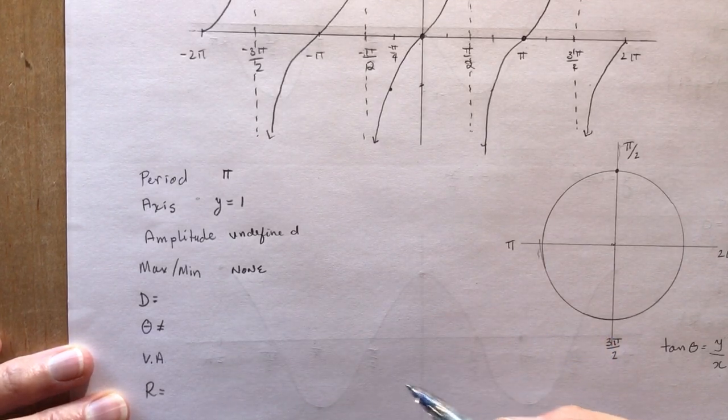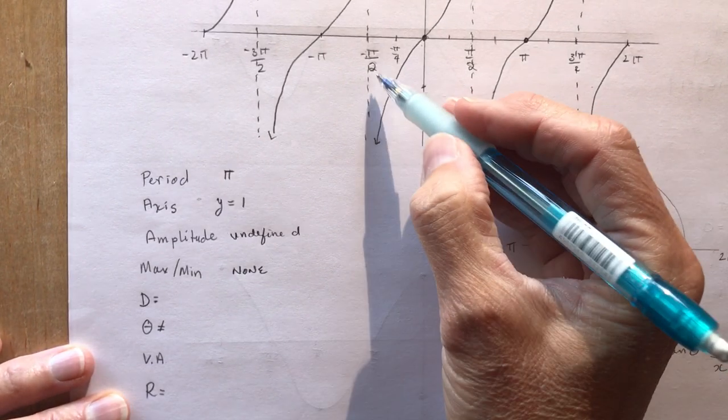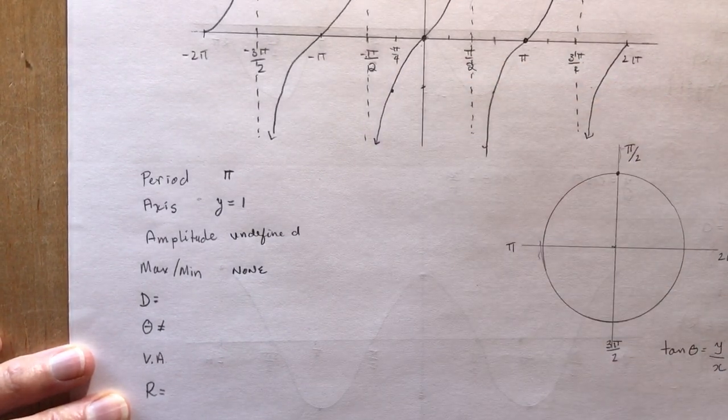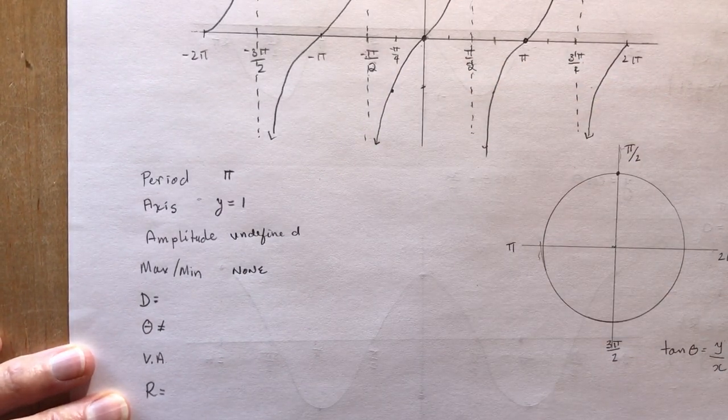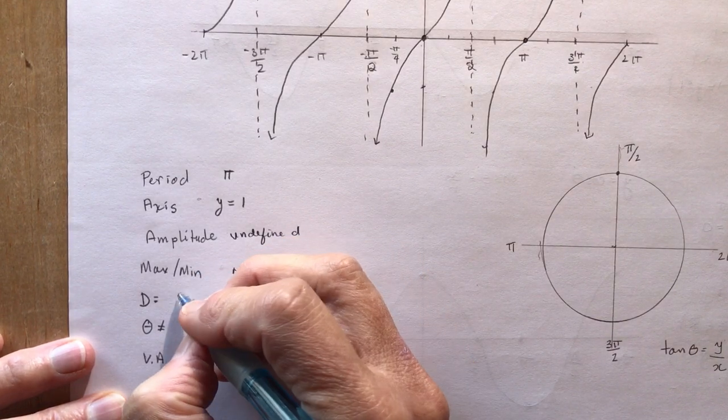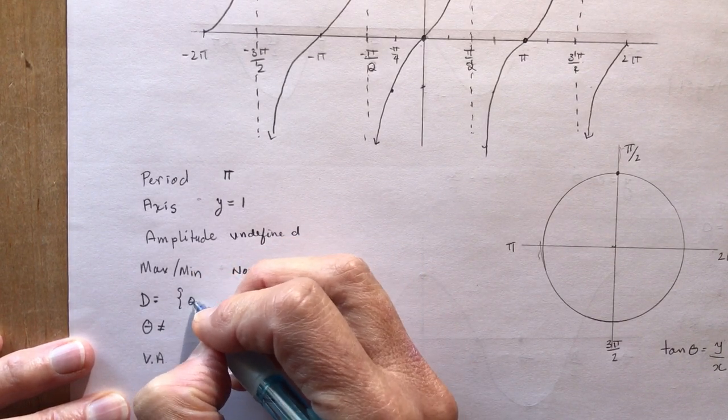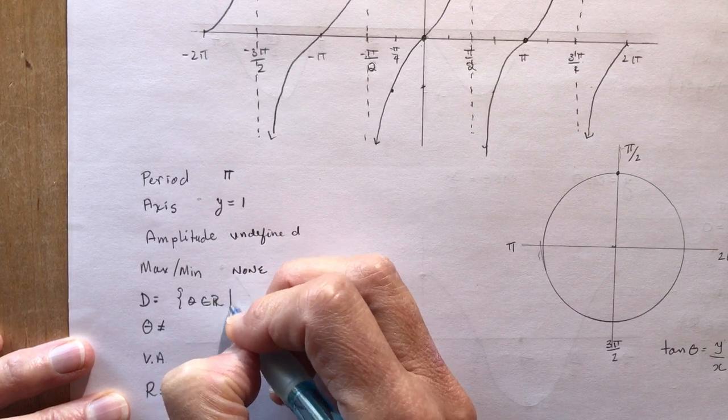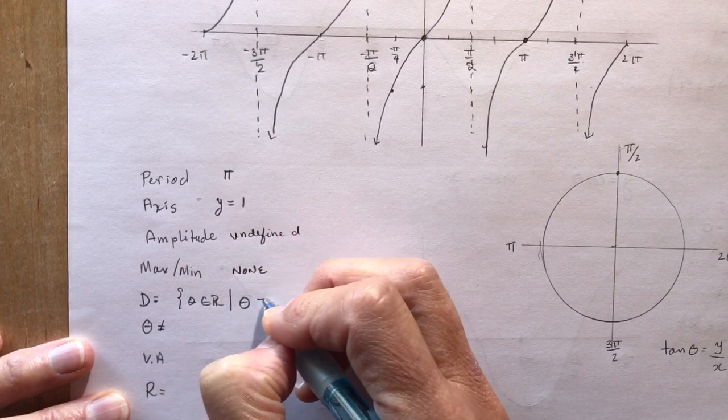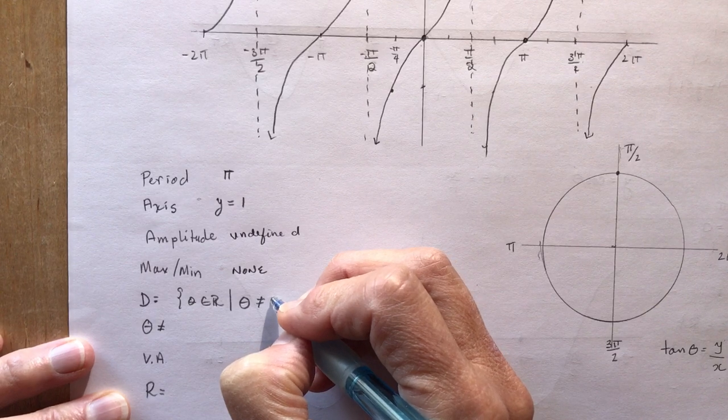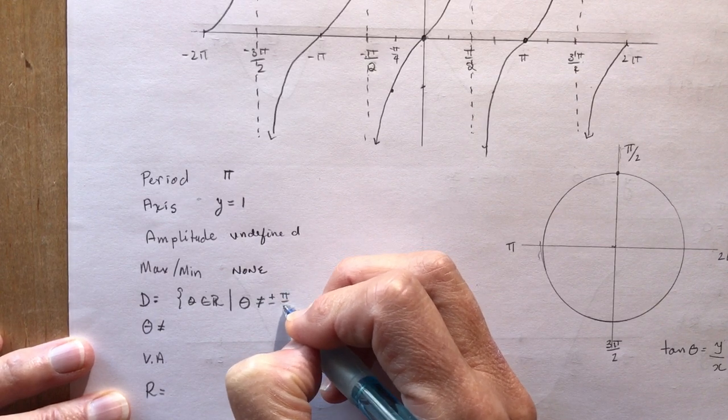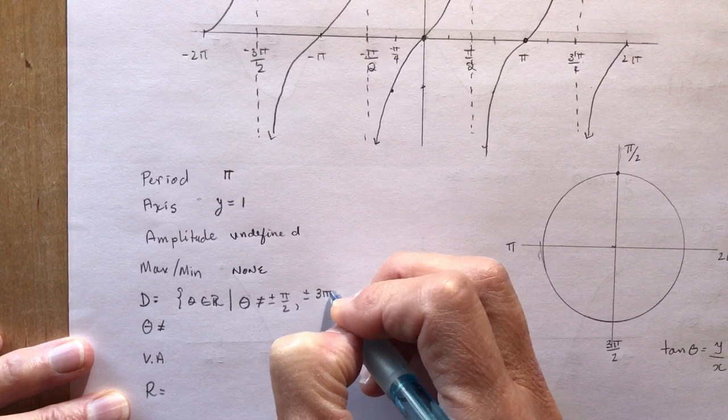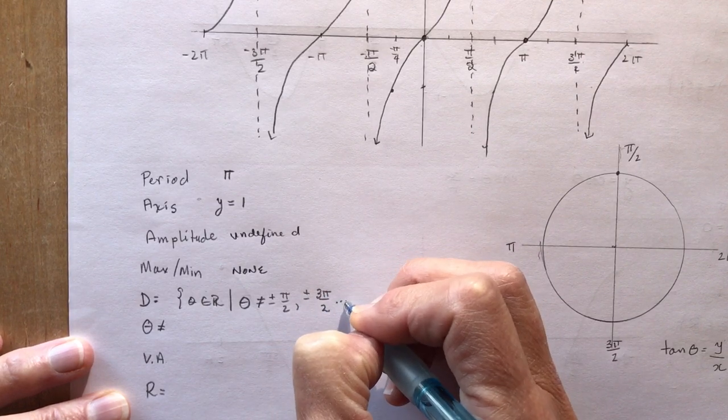What is the domain? Well, we have to restrict the domain because we can't have the domain being equal to these values here, right? We can't go to those pi over 2 places. So the domain is going to be theta, theta is an element of real numbers. Theta is not equal to, and then you could list like plus or minus pi over 2, plus or minus 3 pi over 2, and so on.